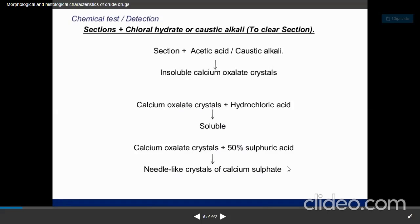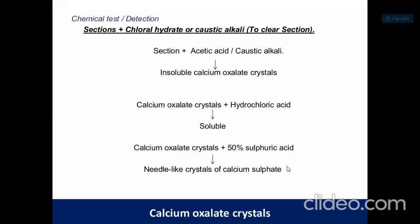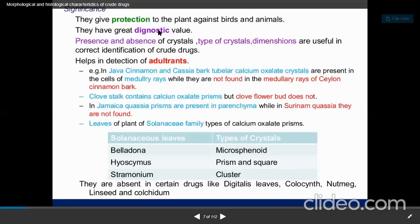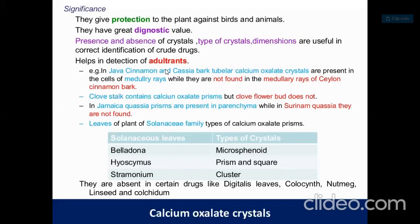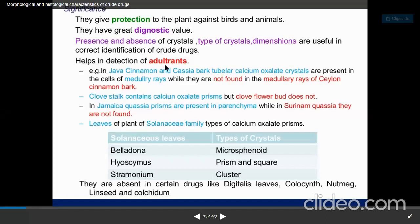The significance of calcium oxalate crystals is that they give protection to the plant against birds and animals. They have great diagnostic value — the presence, absence, type, and dimensions of crystals are useful in the correct identification of crude drugs for the pharmacognosist. They also help in the detection of adulteration, because when we go for microscopical study we will know the specific shape of calcium oxalate crystals, while earthly matter and sand particles will have a different shape.